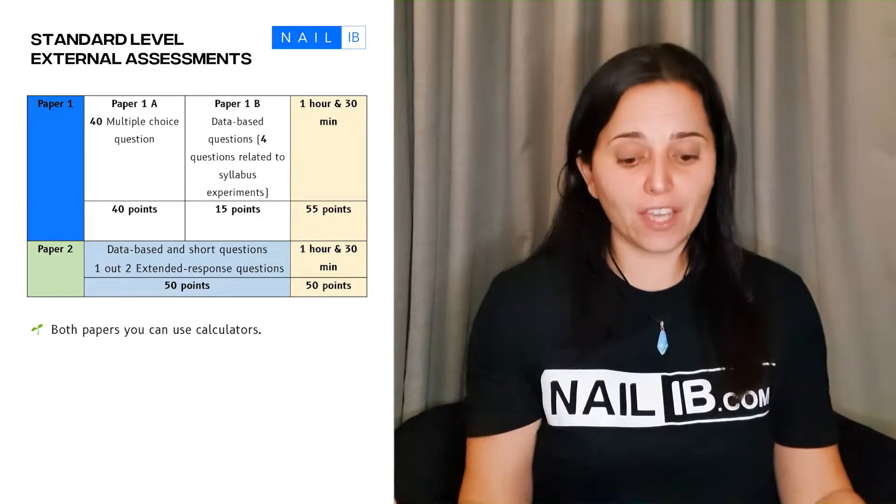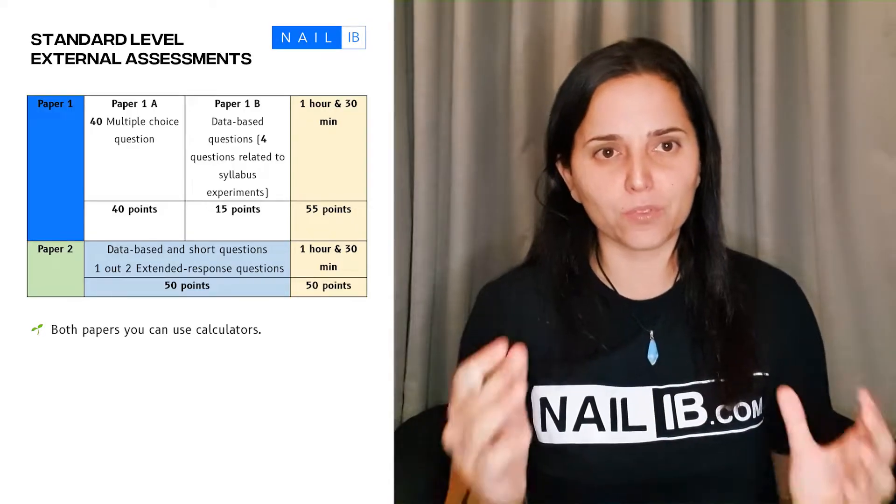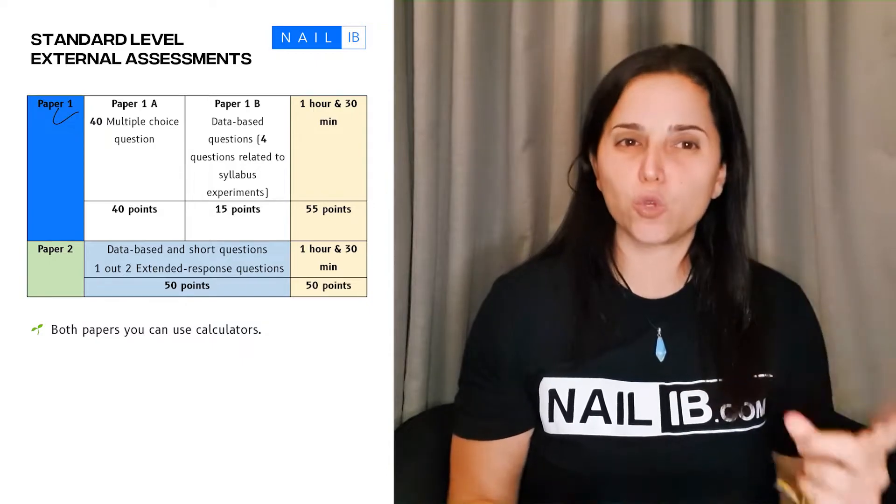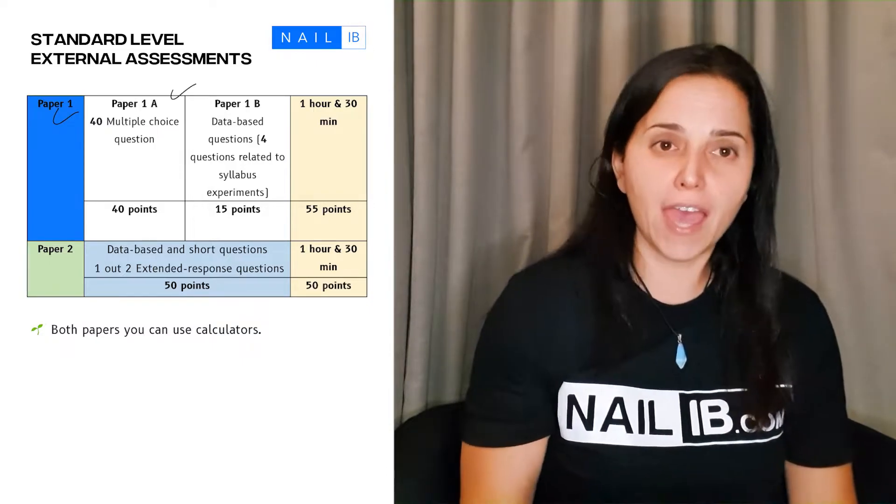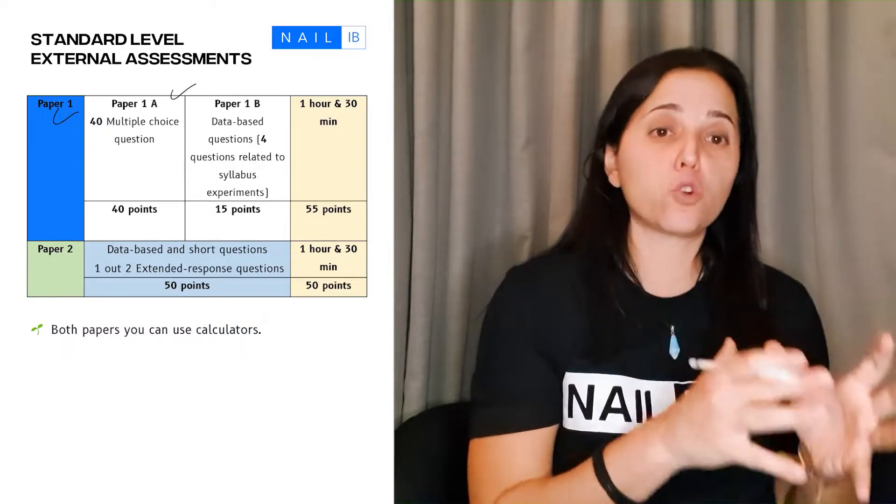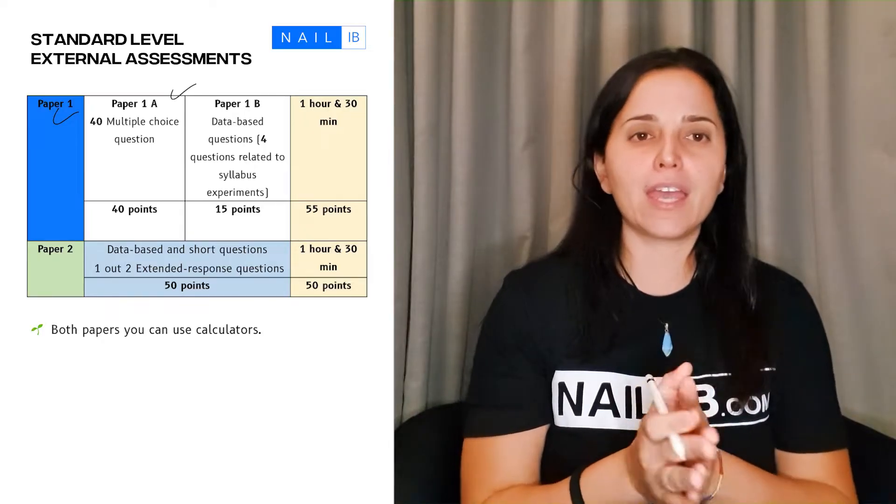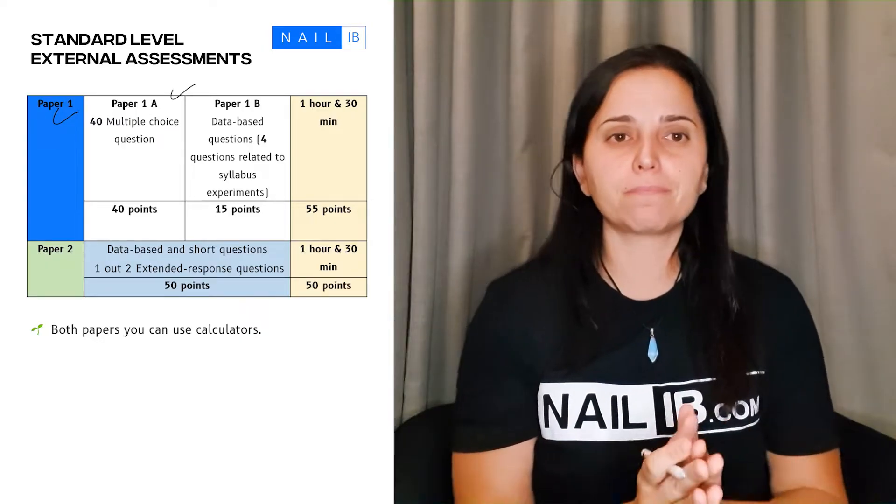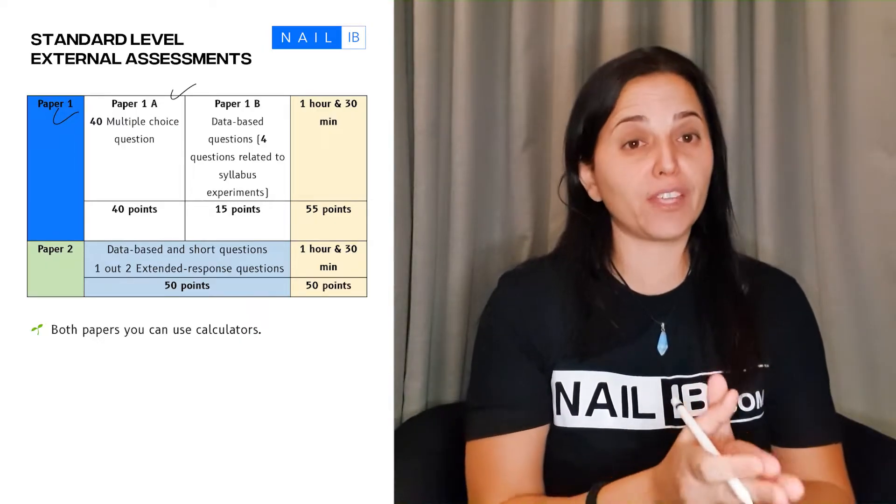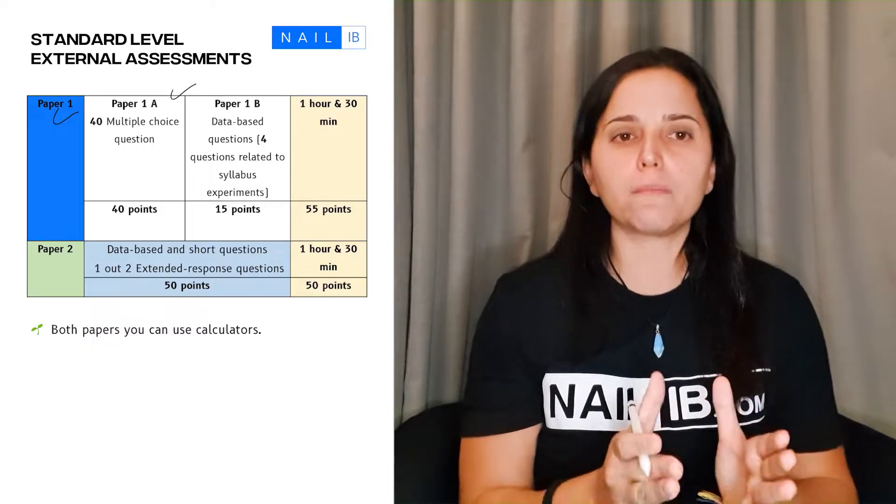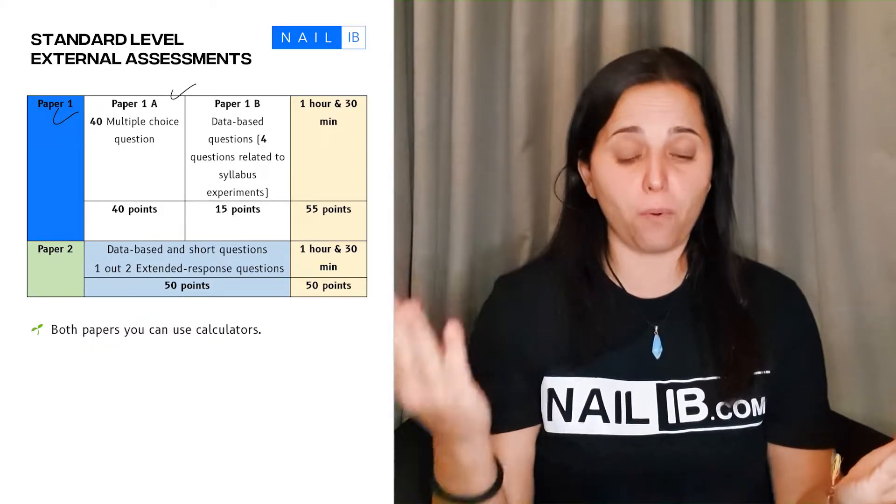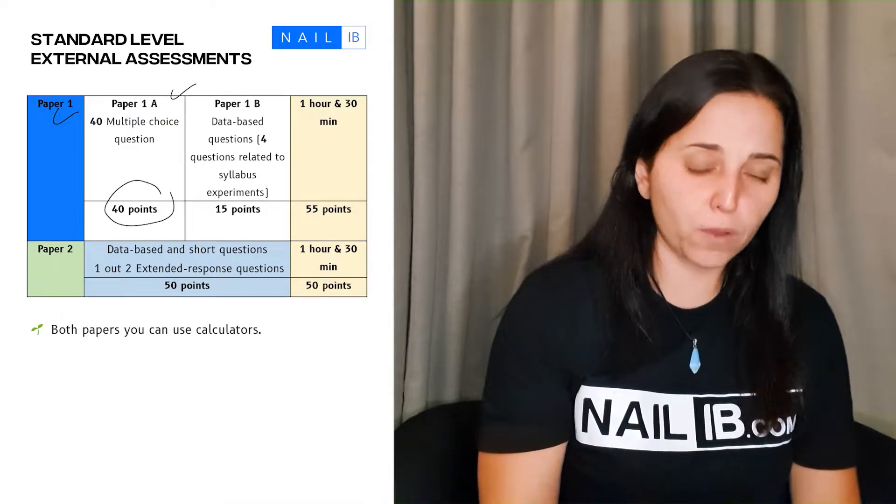Now let's talk about the tests. How do these tests compose? The first one is paper one. Paper one has two sections. You have section A, which is about 40 multiple choice. Those 40 multiple choice can be about any of the topics from theme A all the way to theme D. For the SL students, it can only be content about SL. For every multiple choice, there is a point, so you can see there are 40 points there.